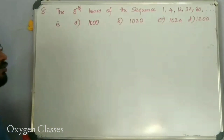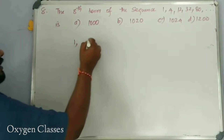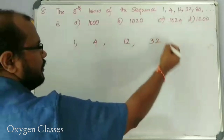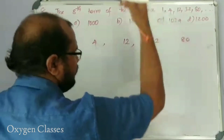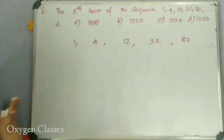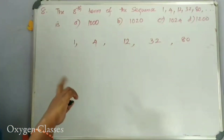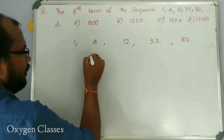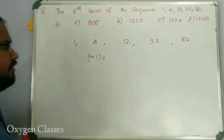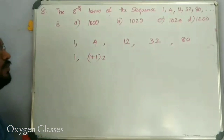The first term is 1, second term is 4, third term is 12, fourth term is 32, fifth term is 80. So the first term of the arithmetico-geometric progression is 1: 2 into 2 is 4, 1 plus 1 into 2 is 4 — 2 squared.